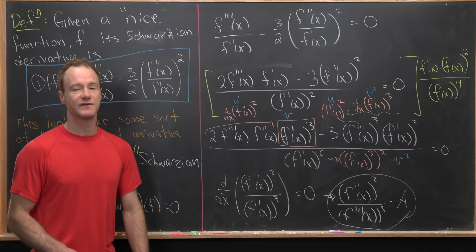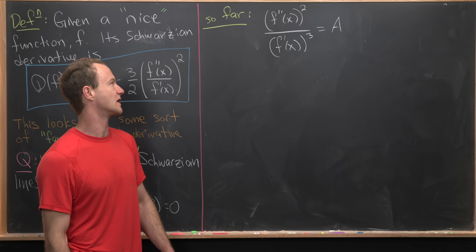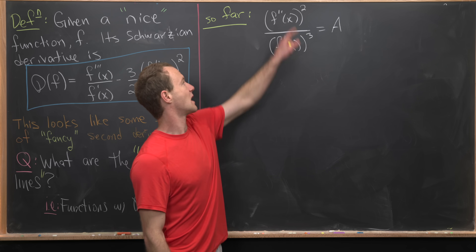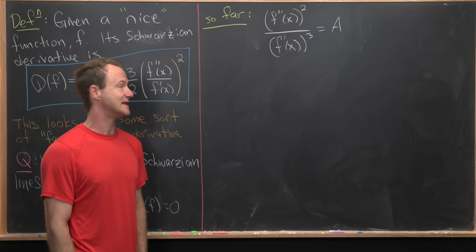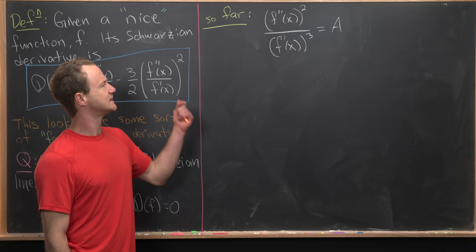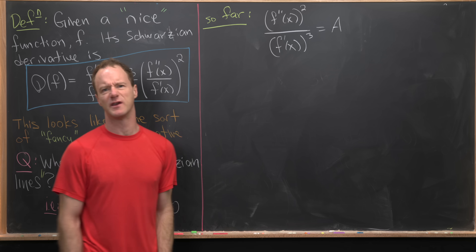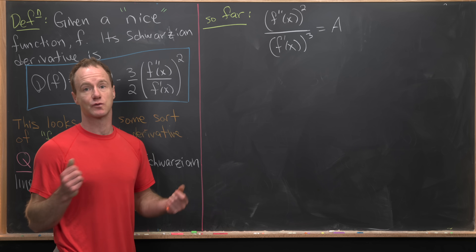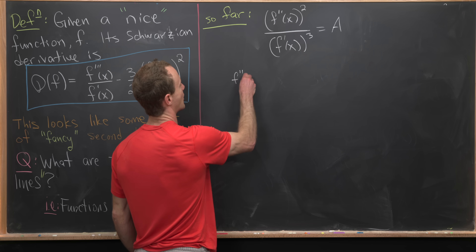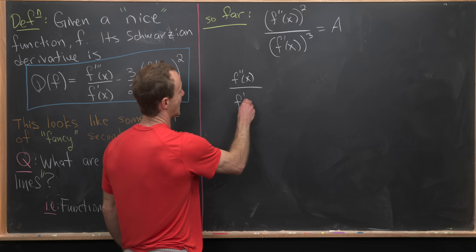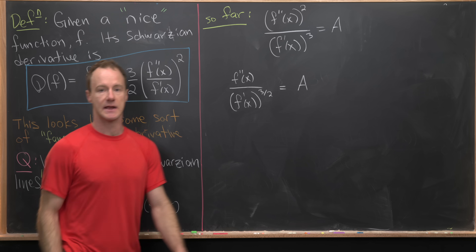On the last board we ended up with f double prime of x squared over f prime of x cubed equals A, where A is a constant. Taking the square root of both sides — and absorbing the square root of A back into the constant A since it's arbitrary — gives us f double prime of x over f prime of x to the three halves equals A.